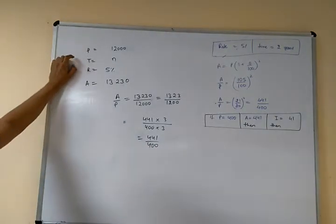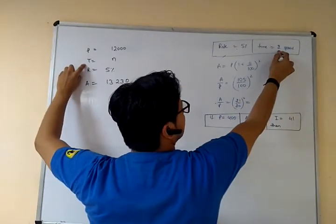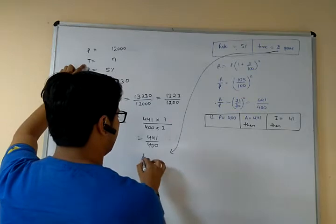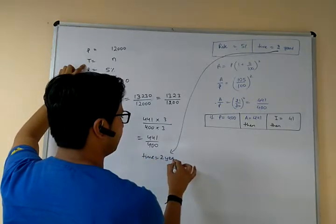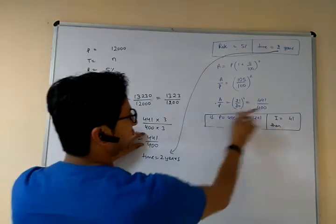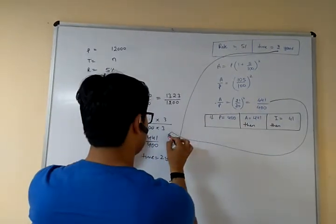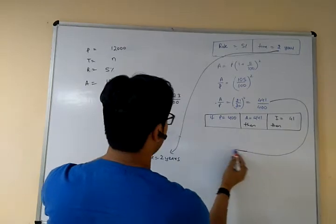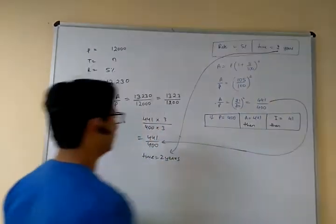Then, time — time clearly equals 2. Therefore time is equal to 2 years. This ratio 441 upon 400 gives us the time as 2 years.